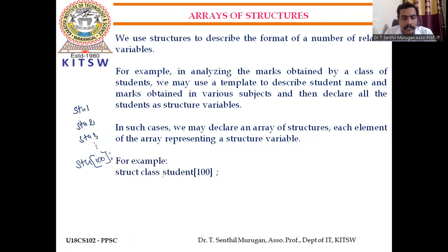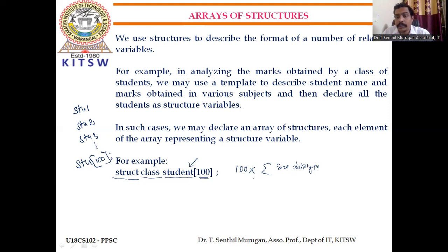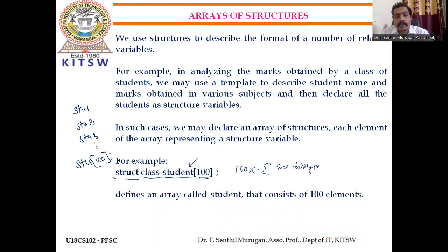In variable declaration, struct is the keyword, followed by the structure name or tag name, and the variable with size 100 means 100 variables are created. Memory allocated equals 100 multiplied by the sum of the sizes of all data types declared inside the structure. If only 10 elements are used out of 100, 90% of memory may be wasted, but the advantage is that more variables can be created to access the members.